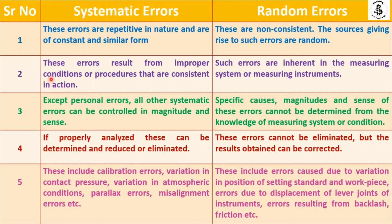Second point: systematic errors result from improper conditions or procedures that are consistent in action. Environmental conditions or improper methodologies of measurement are the major issues for generating systematic errors. But random errors are inherent in the measuring systems or measuring instruments.